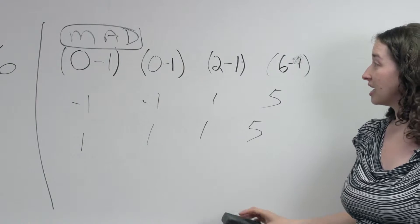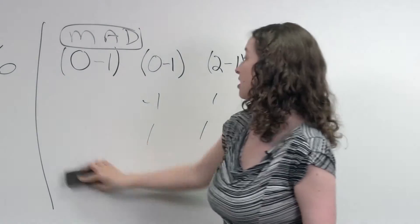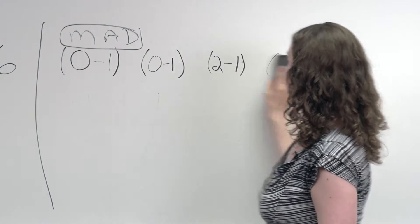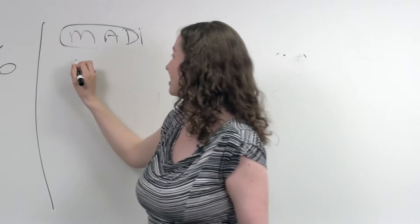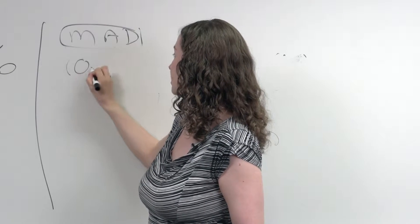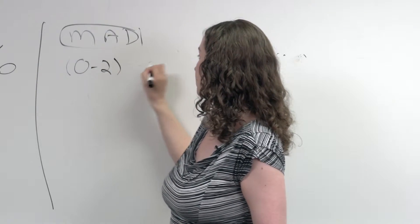But I also could have obtained the mean absolute deviation. And in order to do that, which would also be abbreviated MAD, I could take each of these values and see how far it is from the mean, which was 2 in this data set.